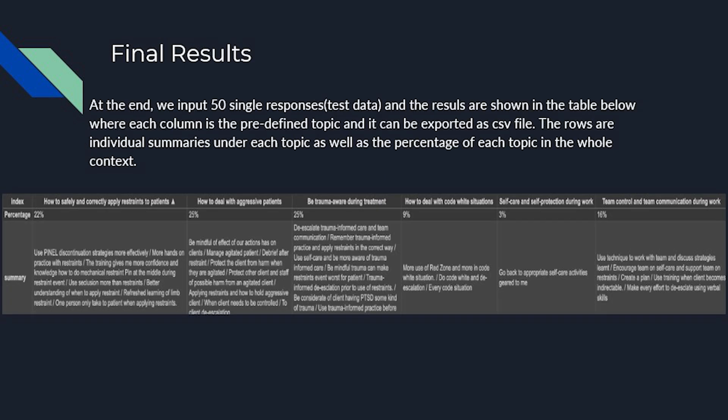This is what our final output would look like. We input 50 single text responses, and the model generates a table where each column represents one topic — for example, the first column represents the topic 'how to safely and practically apply restraints to patients,' together with a percentage stating how many people responded under that topic. If the reviewer wants a closer look at what people are saying under a topic, they can go to the summary section.